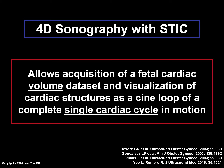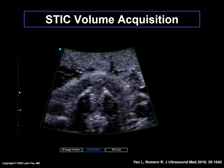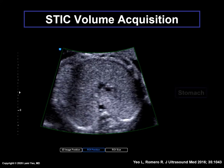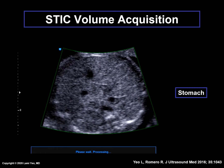Because this is a volume dataset, this provides the examiner with an unlimited number of images for review. Moreover, STIC volumes may be stored indefinitely and reviewed offline by the examiner or even by experts remotely through telemedicine. With the four-chamber view as the acquisition plane and applying appropriate settings, the volumetric ultrasound probe should automatically sweep from the fetal upper mediastinum down to the stomach. Here is an example of a STIC volume being acquired, sweeping from the upper mediastinum through the four-chamber view and down to the fetal stomach. When completed, the STIC volume display comprises thousands of two-dimensional images acquired through the area of interest during this single automated sweep.